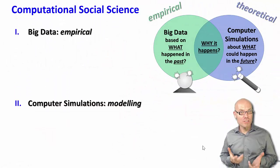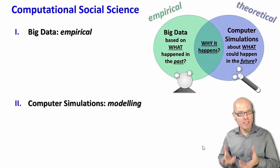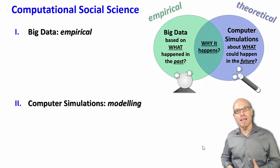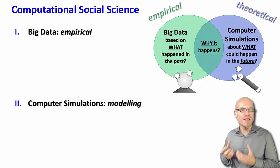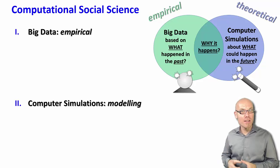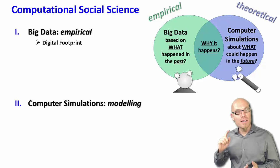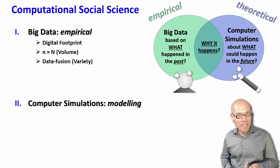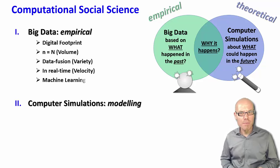Summing up: modern computational social science is built on the digitalization of both legs of science — the big data empirical aspect and theoretical computer simulations. The big data paradigm has several characteristics: the digital footprint, less need for sampling, data fusion, real-time data analysis, and the importance of machine learning.